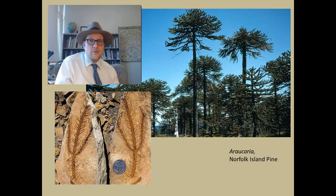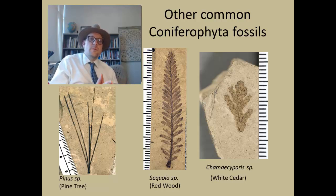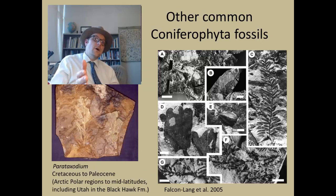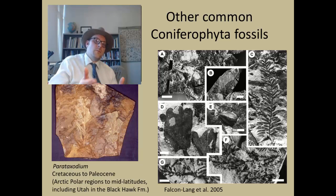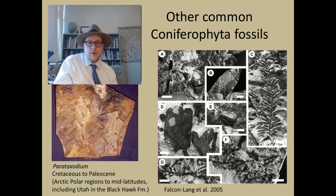Another common group of fossil conifers includes pines, sequoias, redwoods, Calocedrus, and white cedar, all from the Eocene Green River Formation of Utah and Colorado. Here in Utah we also have fossils of the Late Cretaceous Parataxodium, thought to be related to Metasequoia and modern redwoods, and the genus Taxodium, the bald cypress native to the southeastern United States. That leaf genus is also found in the high Arctic during the warm period of the Cretaceous.